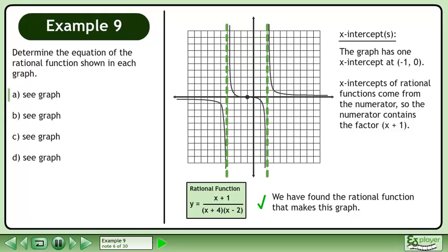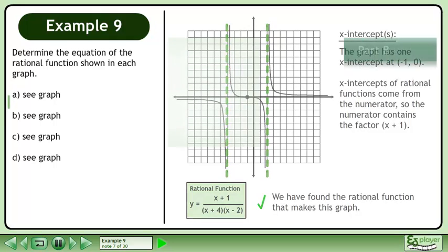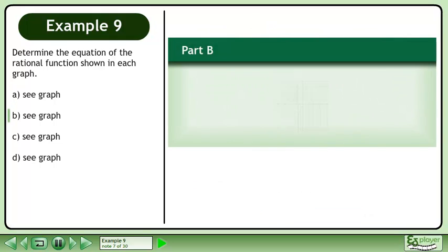We have found the rational function that makes this graph. Now we'll move on to part b.